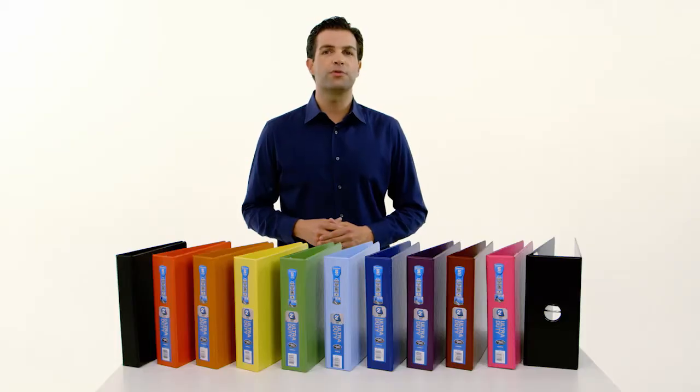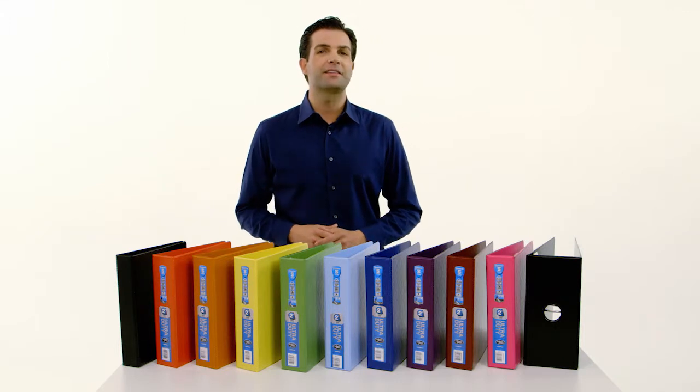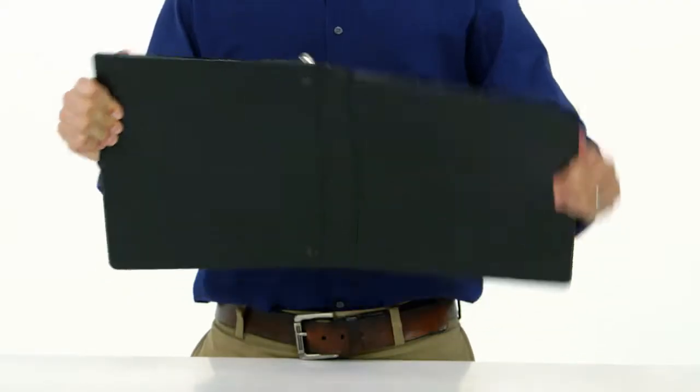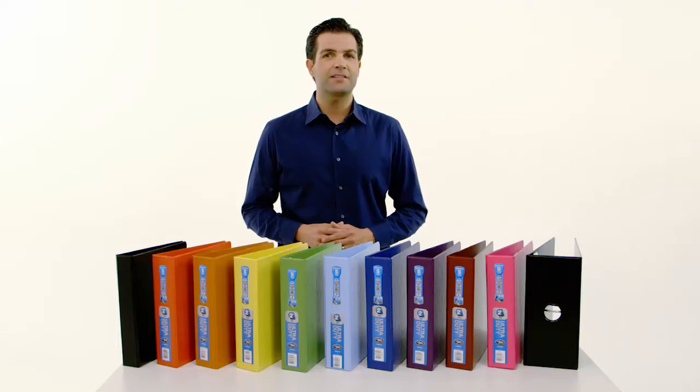Wilson Jones Ultra Duty Binders are made from polypropylene, a neutral plastic that is extremely durable. Pound for pound, polypropylene is three times stronger than steel. These binders last up to 10 times longer than traditional vinyl binders.